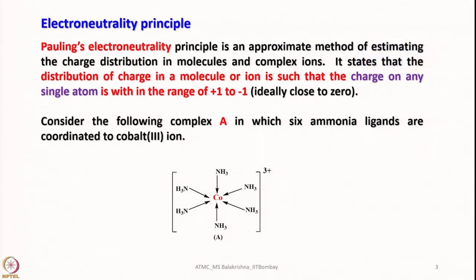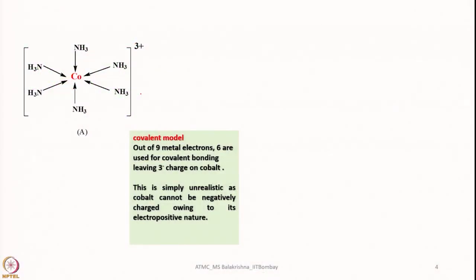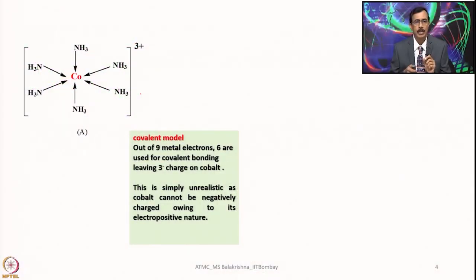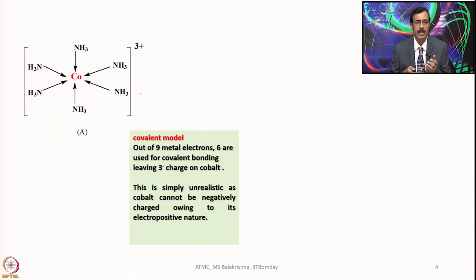To test this principle, let us consider the well-known example hexamminecobalt(III) ion. Considering the covalent method: we have 9 electrons in the valence shell — that is 3d7 4s2 — and assume that 6 electrons are used for covalent bonding, leaving 3 as excess charge on cobalt. Out of 9 electrons from the valence orbital of cobalt, 6 are utilized for making covalent bonds with the ammonia ligands, and 3 electrons will be left, considered as a 3− charge on cobalt.